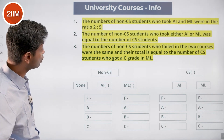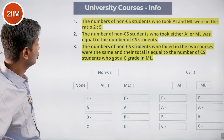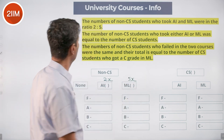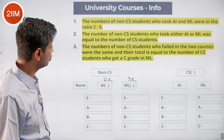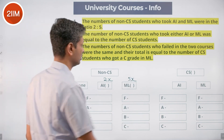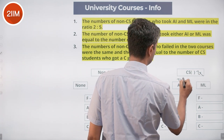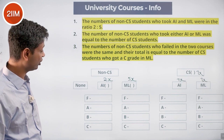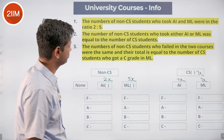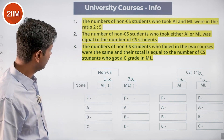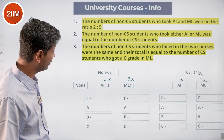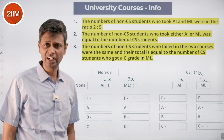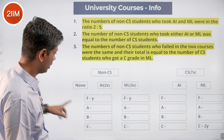Let's capture the constraints. Non-CS students in AI and ML are in ratio 2:5, so call them 2x and 5x. The total 7x equals the number of CS students, so all 7x CS students take both courses. The numbers of non-CS students who failed in the two courses were the same — call them Y and Y — and their total 2Y equals the number of CS students who got a C grade in ML.